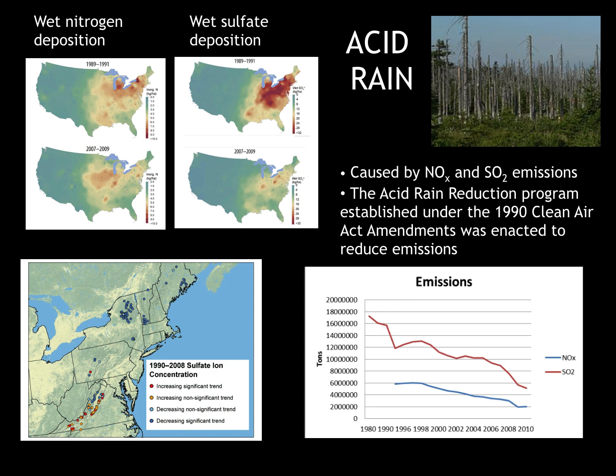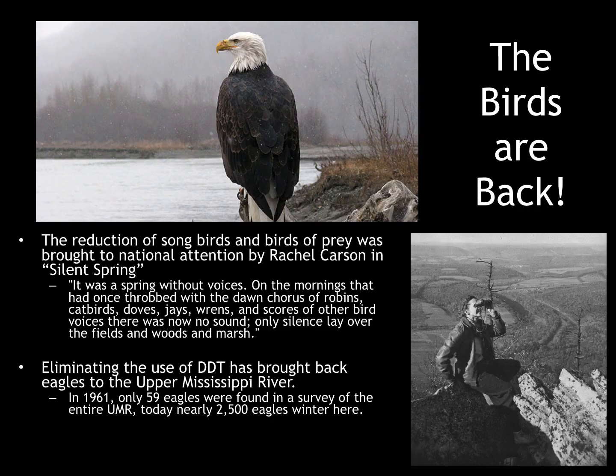Acid rain is caused by nitrogen and sulfate emissions. The acid rain reduction program established under the 1990 Clean Air Act amendments was enacted to reduce emissions. You can see how much nitrogen and sulfate amounts have decreased over the past 20-some years in the top left, and emission rates are far down, as shown in the bottom right corner.